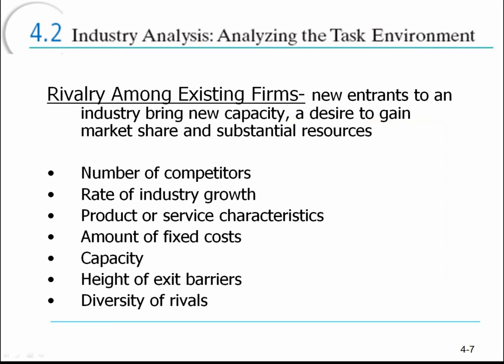Rivalry among existing firms refers to the current firms in the marketplace and how aggressively they are competing with each other. Some industries compete fairly friendly with not much direct competition, no price wars or targeted advertising. Other industries are marked by that — for example, the cell phone industry has commercials where one company specifically targets another. Verizon, for example, specifically targeted Sprint to take market share, even using former spokespersons in their advertising. The more competitive the industry, the more difficult it is to be successful and the more strategic your planning must be.